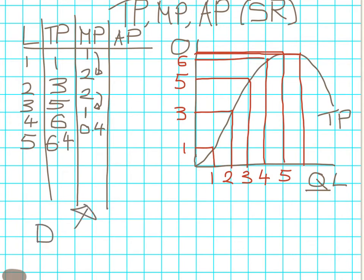We can see total product is still going up and eventually is going to fall. But the additional output that you're getting after a certain point is diminishing, not decreasing in terms of total product, but diminishing the additional output that you're getting.